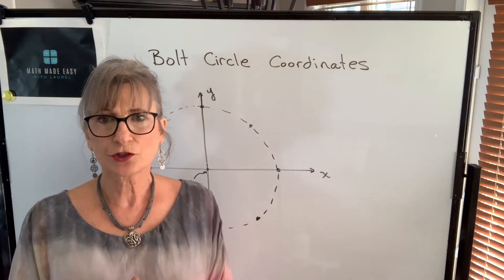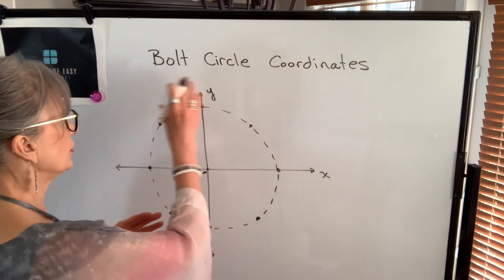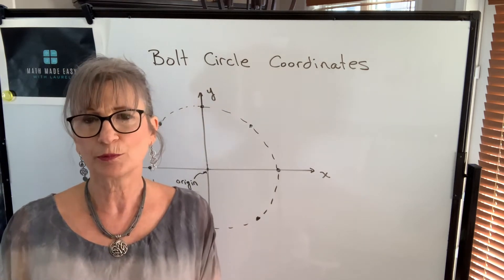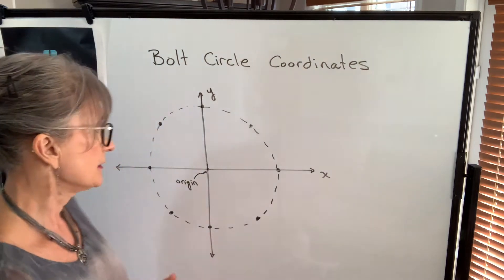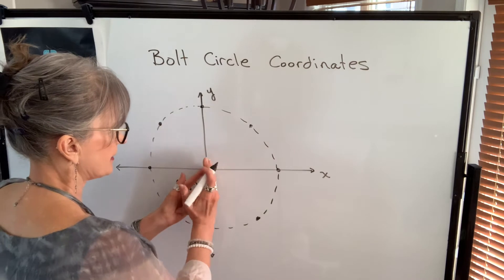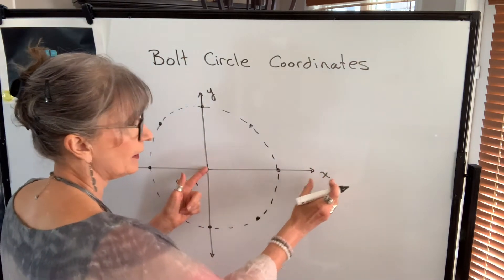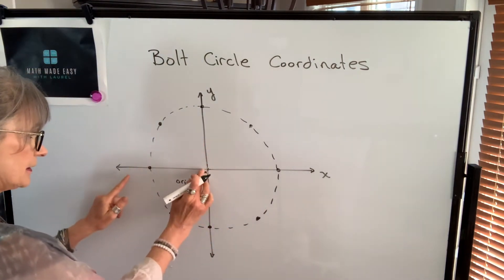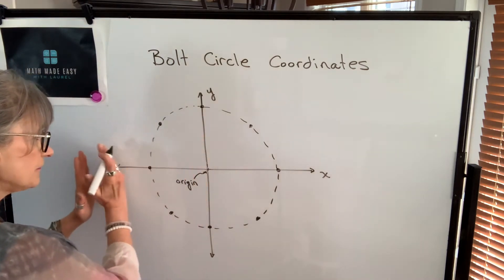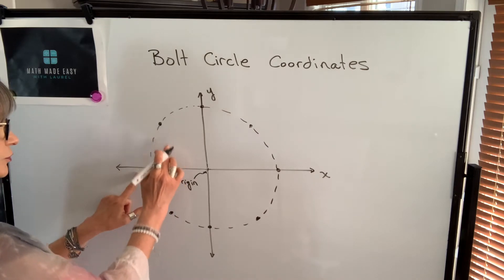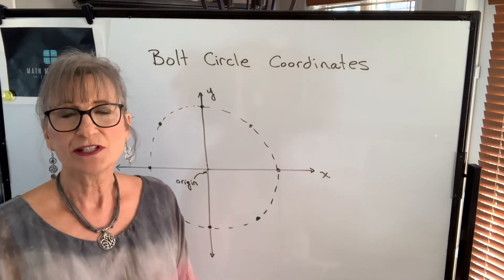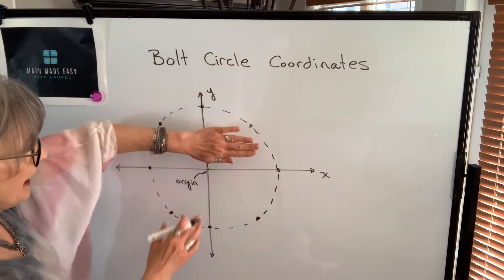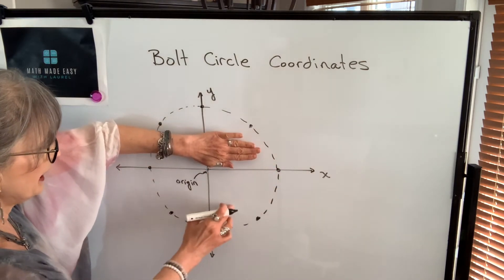You have four quadrants in your Cartesian coordinate system: quadrant one, quadrant two, quadrant three, and quadrant four. It's important to understand where the x-coordinate will be positive and where it will be negative, and the same thing with the y-coordinate. Anything to the right of this axis will be a positive value for x, so x will be positive in those two quadrants. Anything to the left of that axis, x will be negative. For the y values, y will be positive above the x-axis, and anything below that, y will be negative.